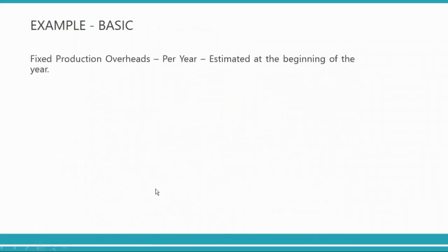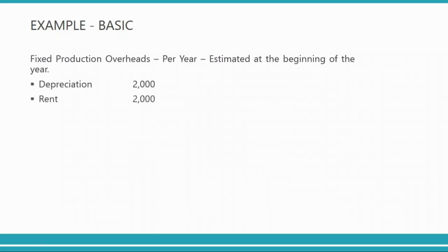Let's suppose you have a fixed production overhead per year and you estimate that overhead at the beginning of the year. When you start any year — say 2018 or 2017 — at the beginning of the year you estimate how much your fixed overheads are going to be. For example, depreciation for your factory is two thousand dollars, rent is two thousand dollars, and insurance is one thousand dollars — totalling five thousand dollars.